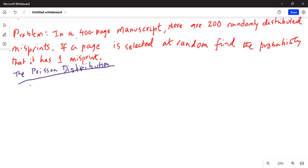Poisson distribution states the probability of X occurrences in an interval of time, volume, area, etc.